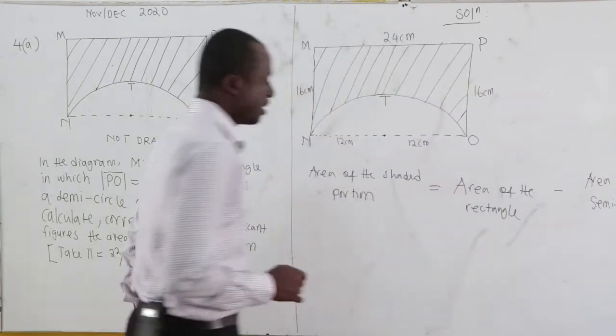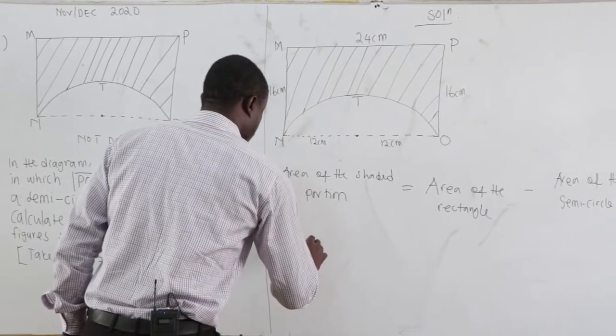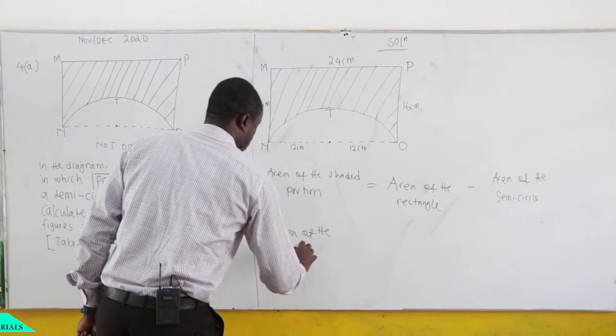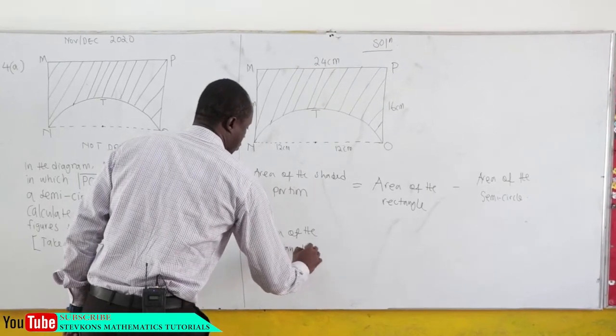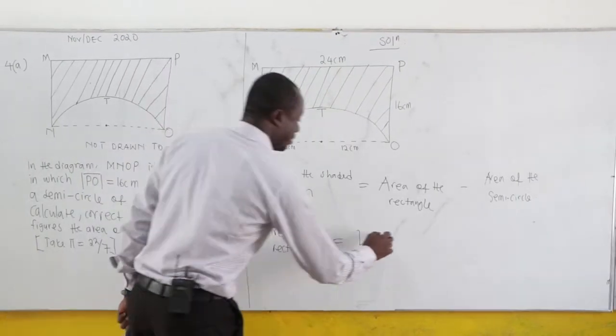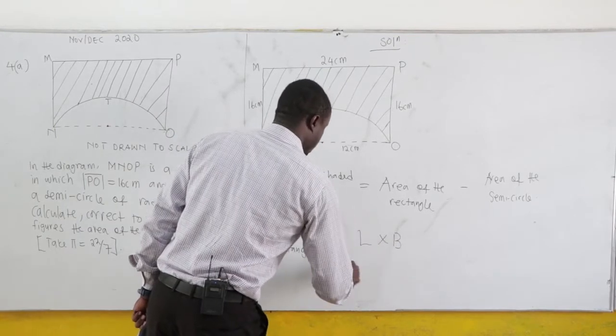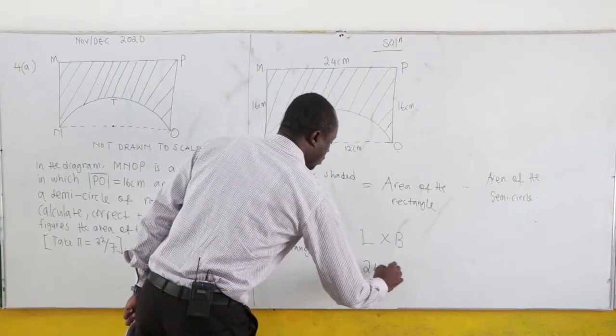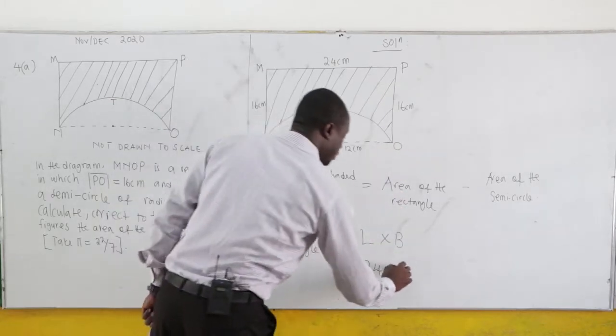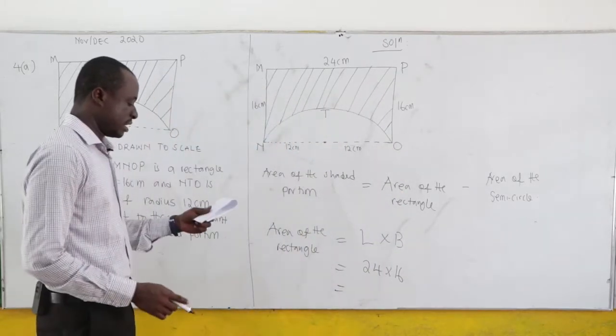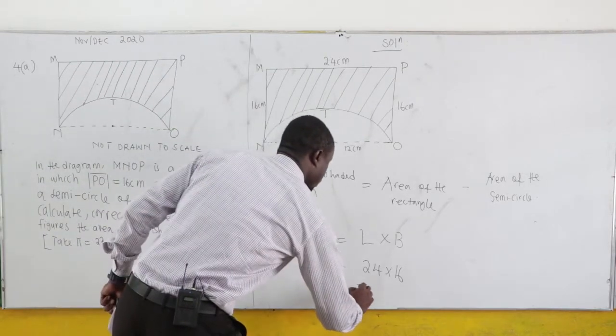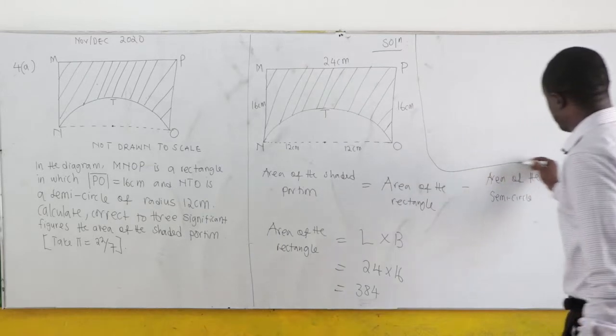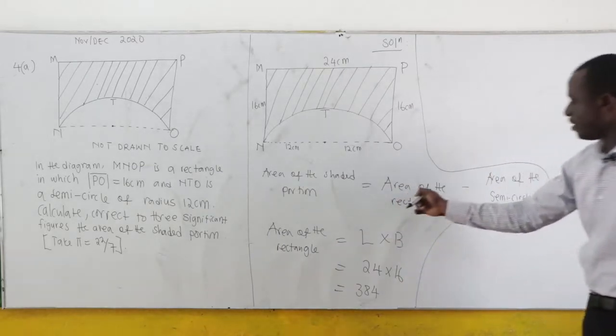So first, let's find the area of the rectangle. Area of the rectangle is the length times the breadth. Now, the length is 24 and the breadth is 16. Now, 24 times 16, this is 384. So we are done finding the area of the rectangle.